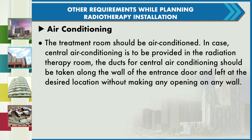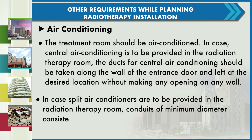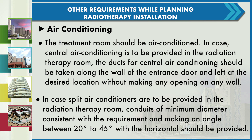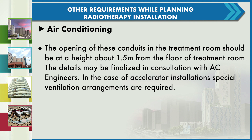Regarding air conditioning: the treatment room should be air conditioned. If central air conditioning is provided, the ducts should be taken along the wall of the entrance door and left at the desired location without making any opening in the wall. If split air conditioners are provided, conduits of minimum diameter at an angle of 20 to 45 degrees with the horizontal should be provided, with the opening in the treatment room at a height of 1.5 meters from the floor. The details may be finalized in consultation with AC consultants.